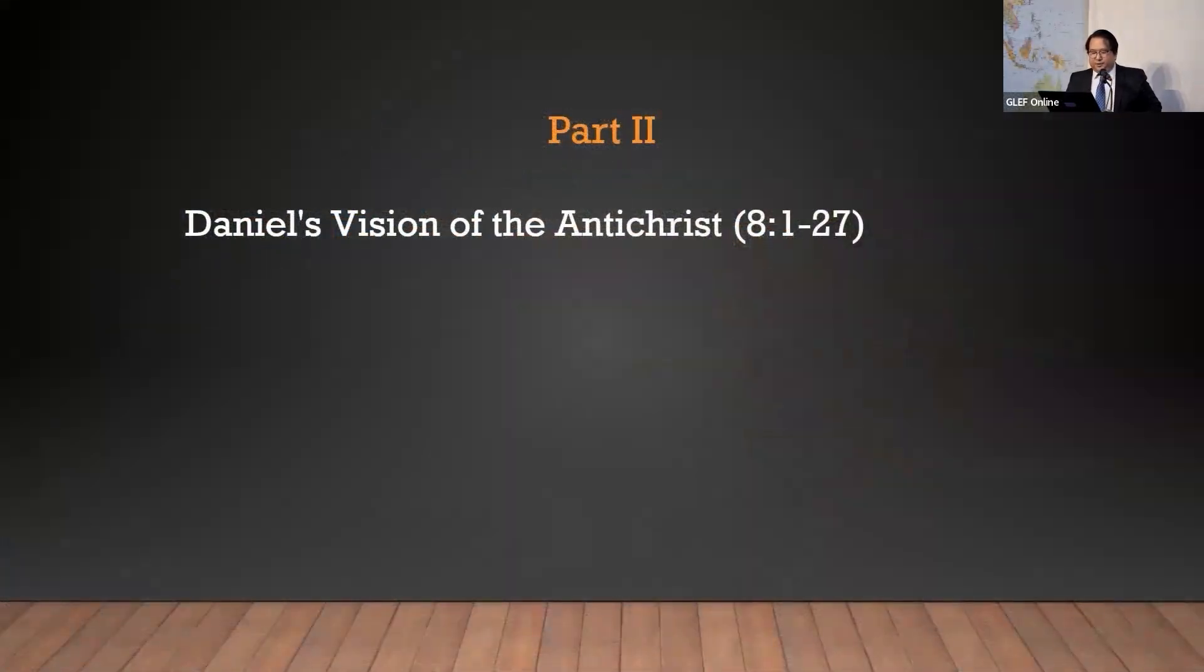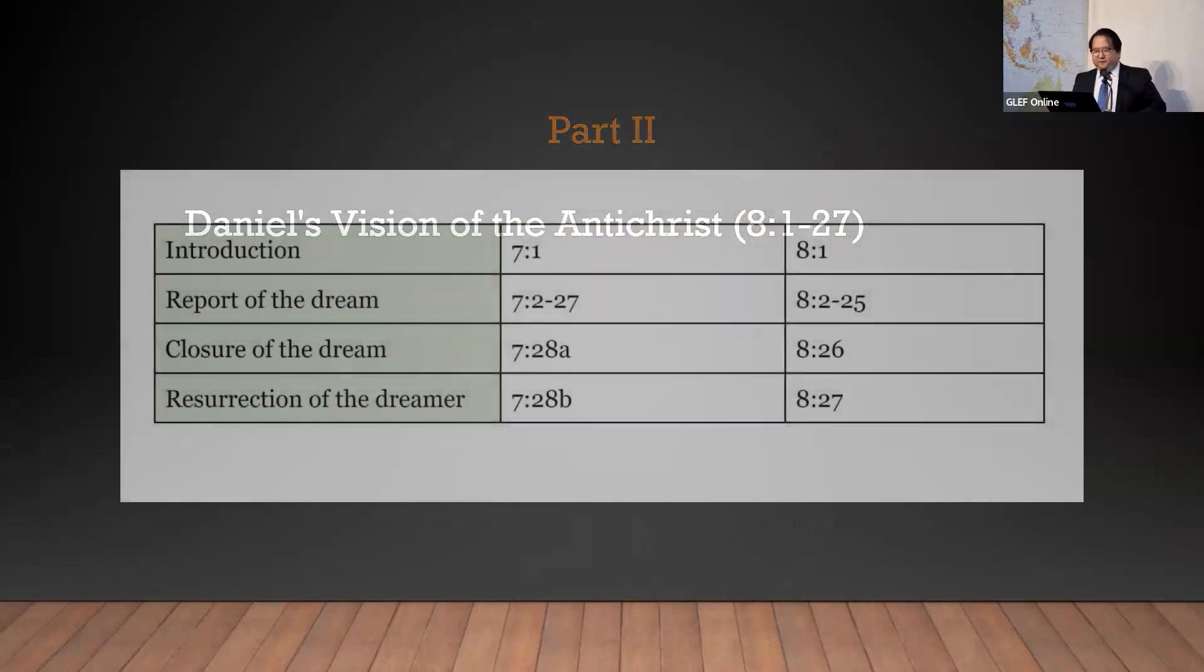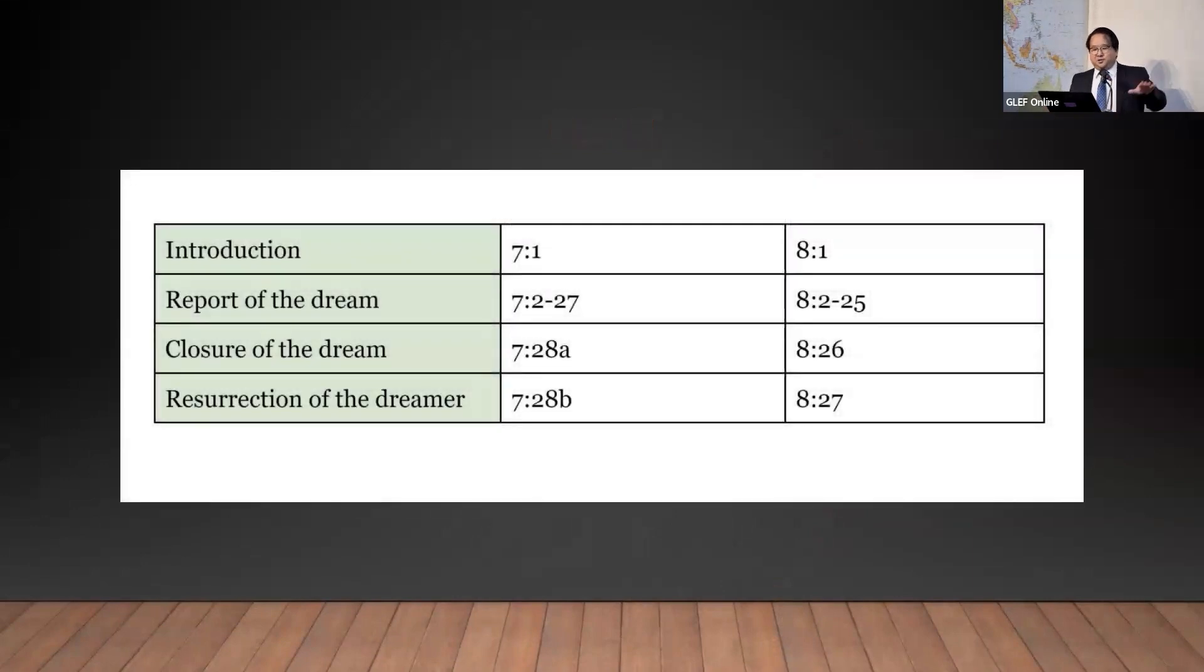Part 2: Daniel's vision of the Antichrist. Chapter 8 is an extremely similar chapter to 7 in terms of the structure and the theme. Even the number of verses almost match. The only difference is that chapter 7 emphasizes the victory of the Son of Man, whereas chapter 8 focuses more on the Antichrist.